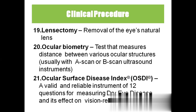Lensectomy is the surgical removal of the natural lens. Ocular biometry is a test of the ocular structures — very similar to an ultrasound scan — used to see the interior of the eyeball and everything inside the eye.